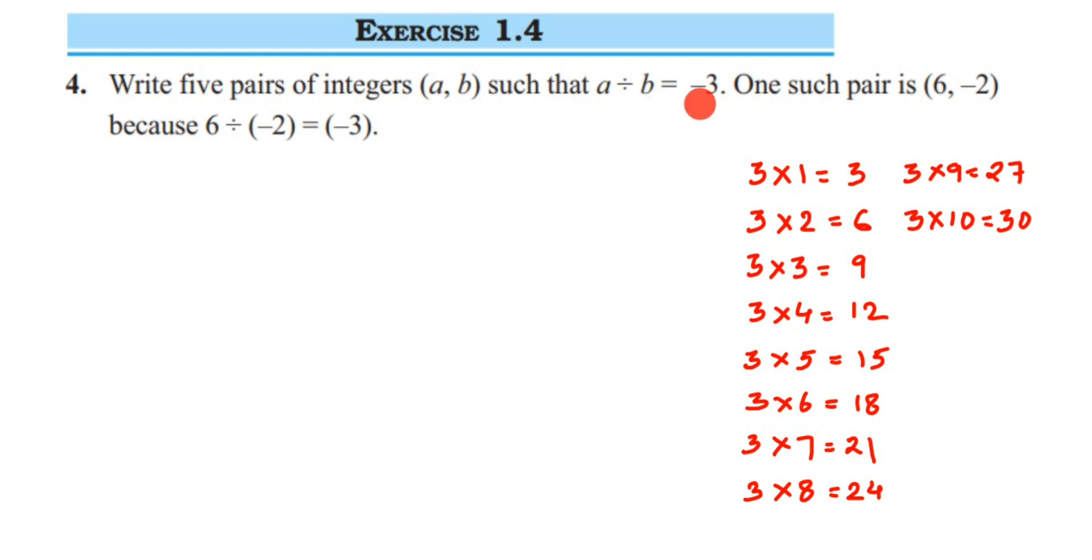To explain this, I have taken the 3 times table here, from 3×1=3 to 3×10=30. This makes it easy to pick the numbers. They have given the example of these numbers.